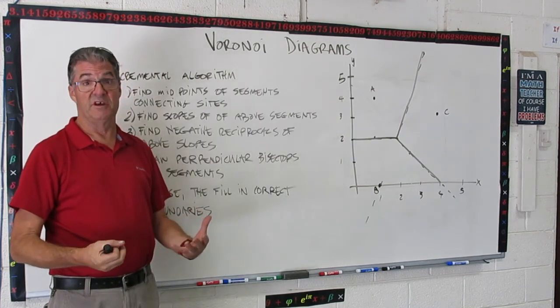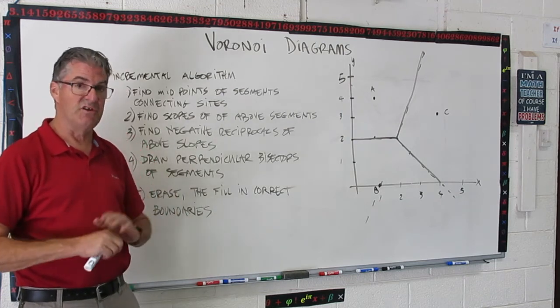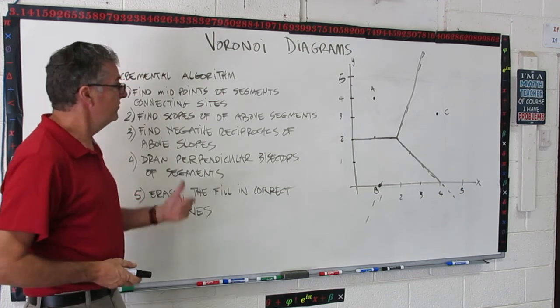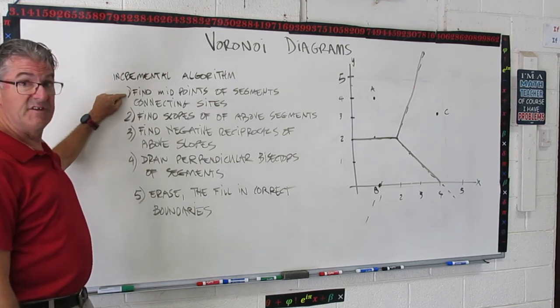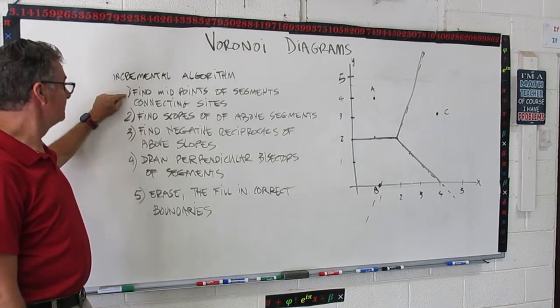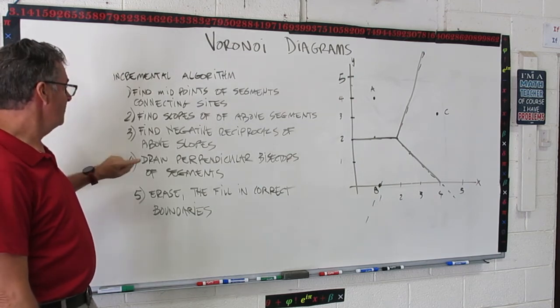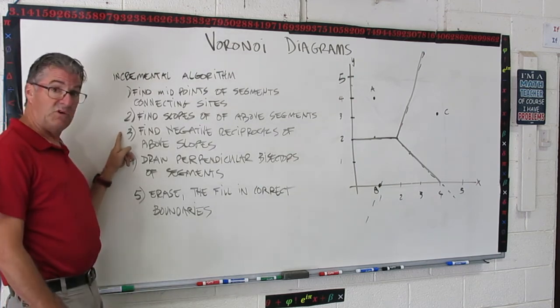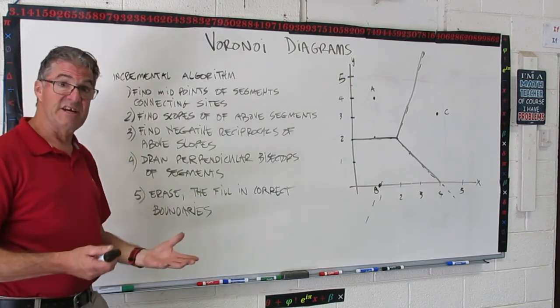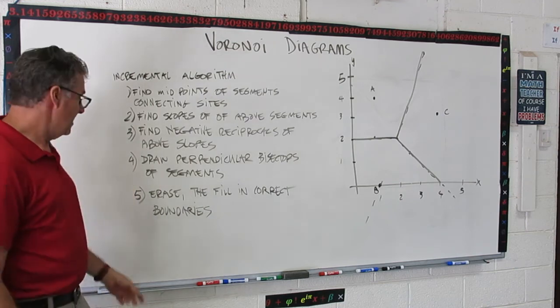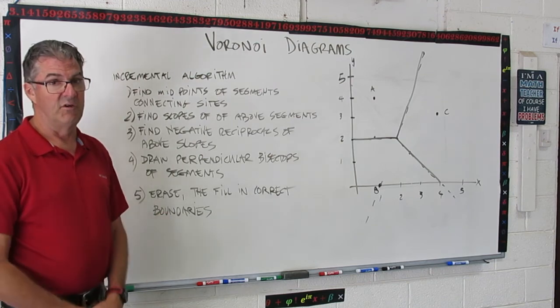So as I promised, I want to summarize that process with a step-by-step method that leaves out all the math and just puts it all into one place. This is probably pretty good for your notes. So to create a Voronoi diagram, first thing you do is you find the midpoints of the segments that connect the sites. Second thing you do, find the slopes of those segments. Third thing you do, find the negative reciprocals of the above slopes. And then the fourth thing is draw the perpendicular bisectors of those segments, and then finally erase, then fill in the correct boundaries to create your Voronoi diagram.